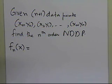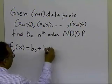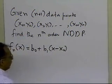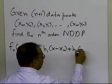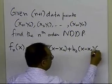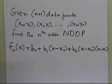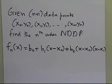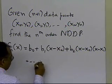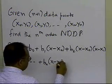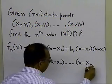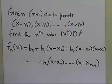We can write the nth-order Newton's Divided Difference Polynomial as: f_n(x) = b0 + b1(x − x0) + b2(x − x0)(x − x1) + ... + b_n(x − x0)(x − x1)···(x − x_{n−1}). That is how the nth-order Newton's Divided Difference Polynomial is going to look.